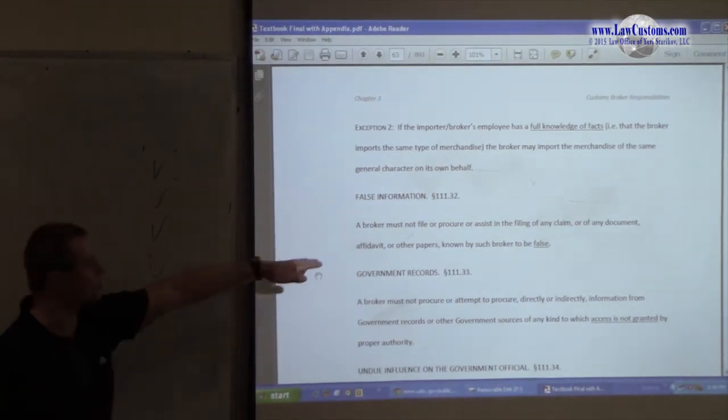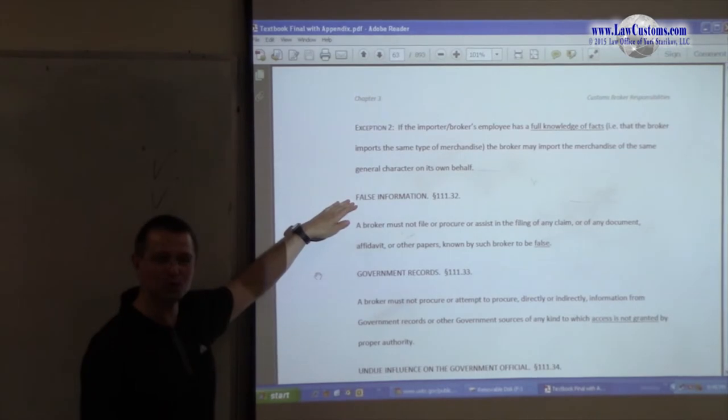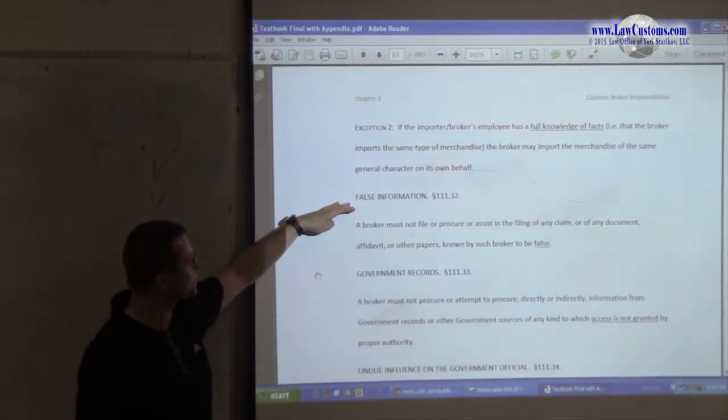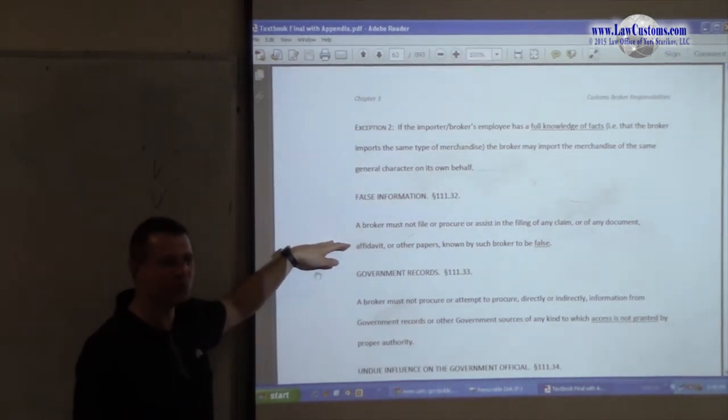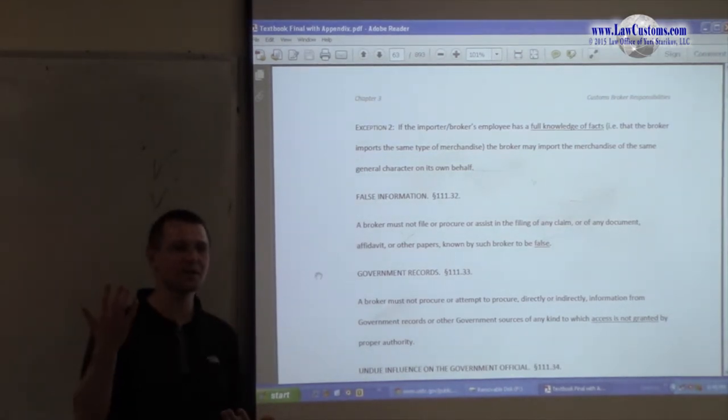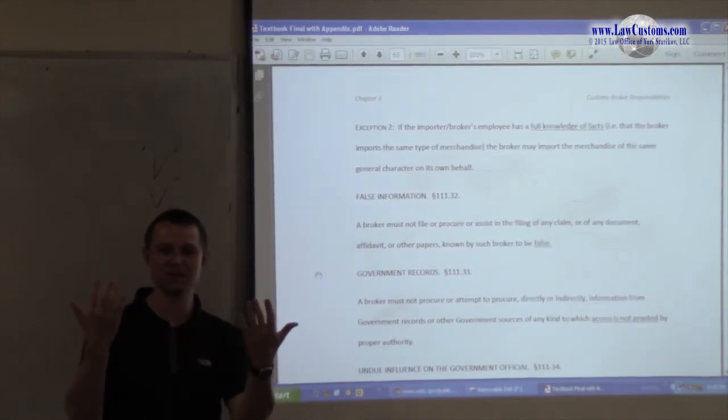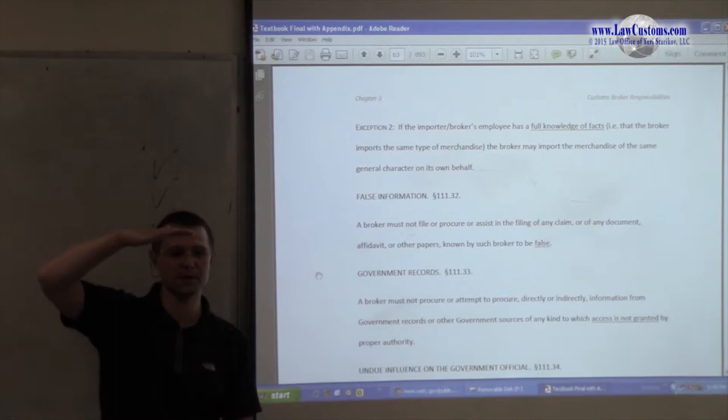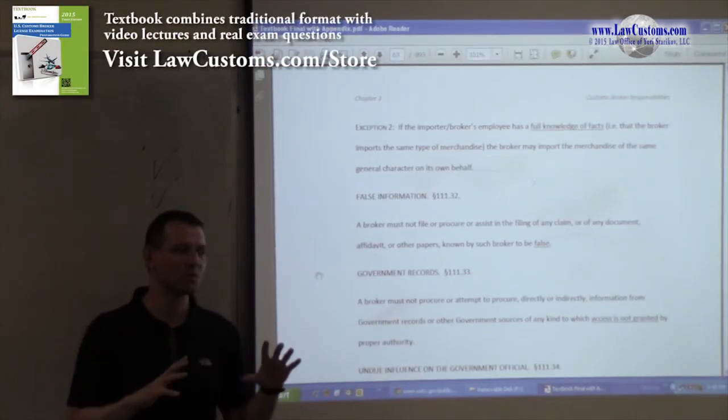Next. Well, false information. You will come across people who want to cut corners, and there will be a borderline where they will give you information which contradicts. You have invoice saying Vietnam, but you have the merchandise that says Thailand, and then you have the bill of lading that says something else. You have discrepancy.